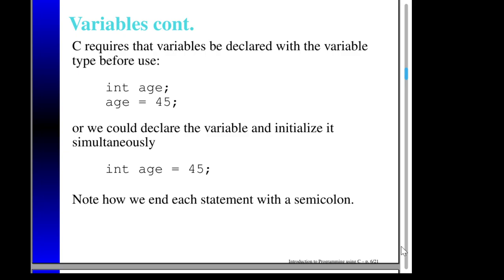In C, if I want to create a variable, I have to specify a type and declare that variable. For example, when I write 'int age', I'm saying that age is of type int. And then later I write 'age = 45', assigning a value to age. If I knew the initial value at the time I created the variable, I could have done it as one step: 'int age = 45'. Each of these statements is terminated by a semicolon.